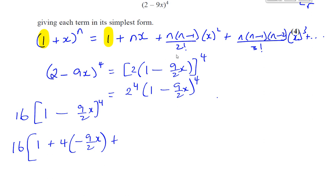Plus, then you've got N(N-1) times X squared over 2 factorial. So N which is 4 times N minus 1 which is 3 times X squared which is (minus 9X/2)² over 2 factorial which means 2 times 1. 2 factorial means 2 times 1. 3 factorial means 3 times 2 times 1.